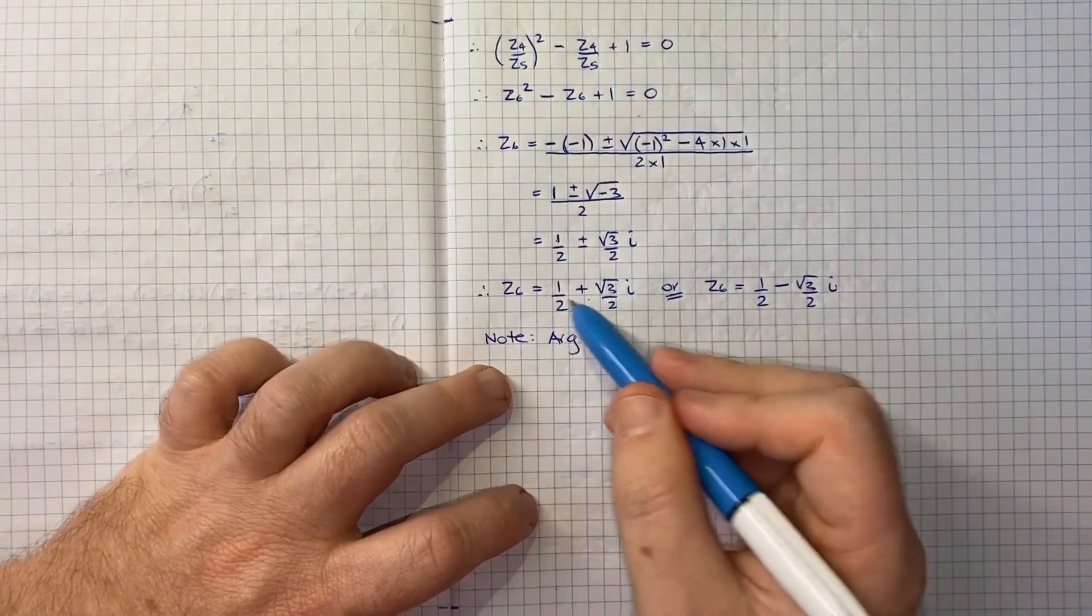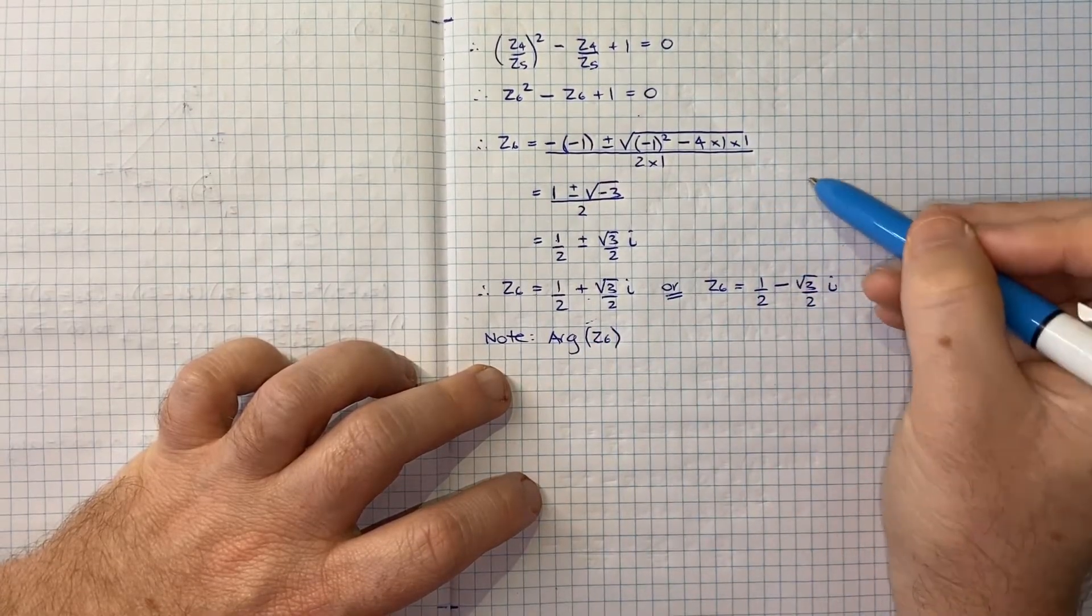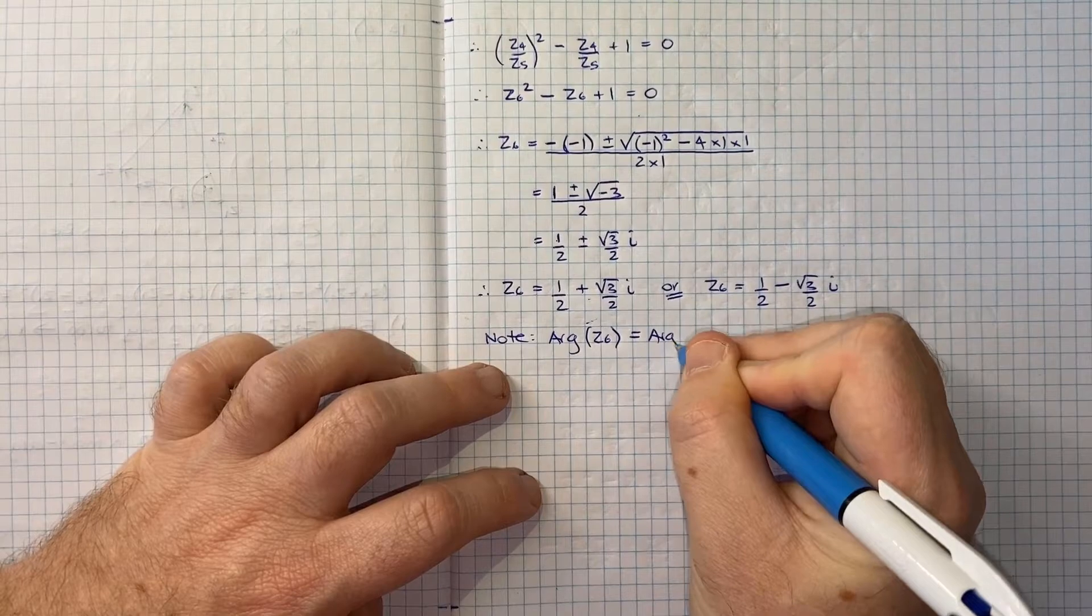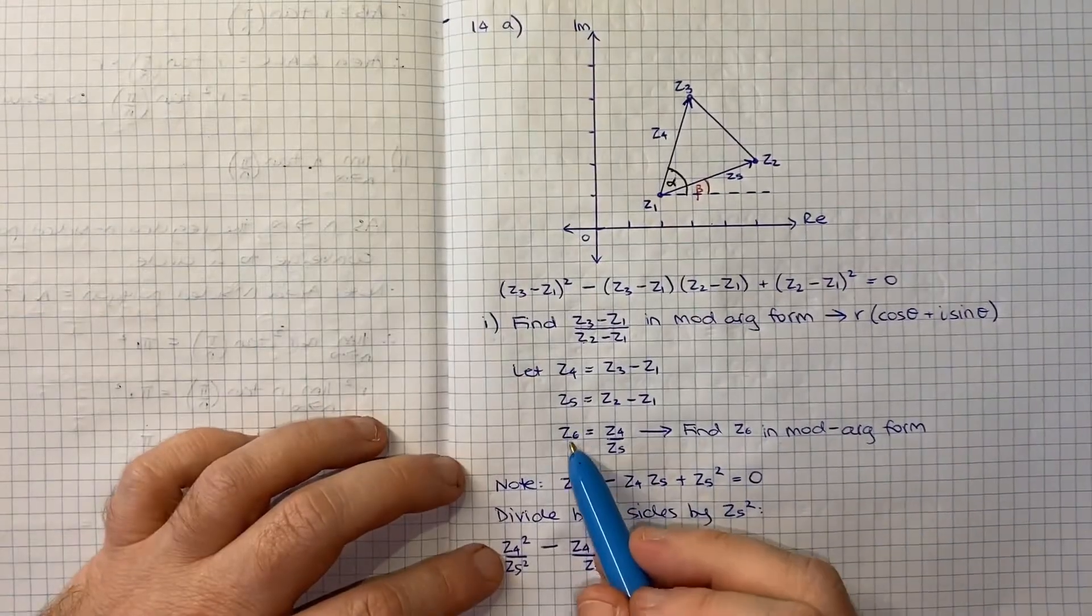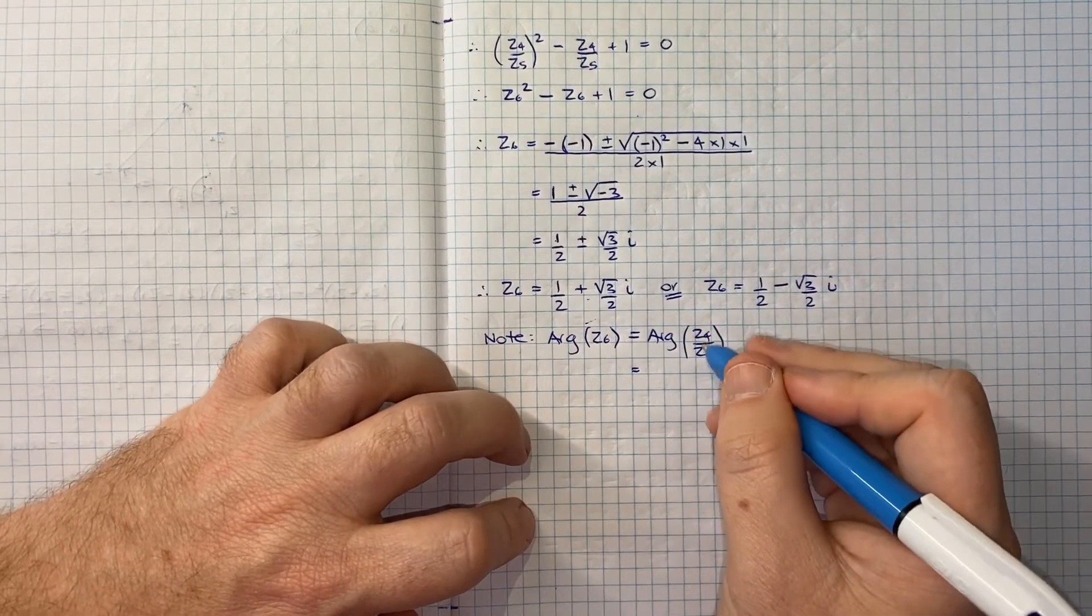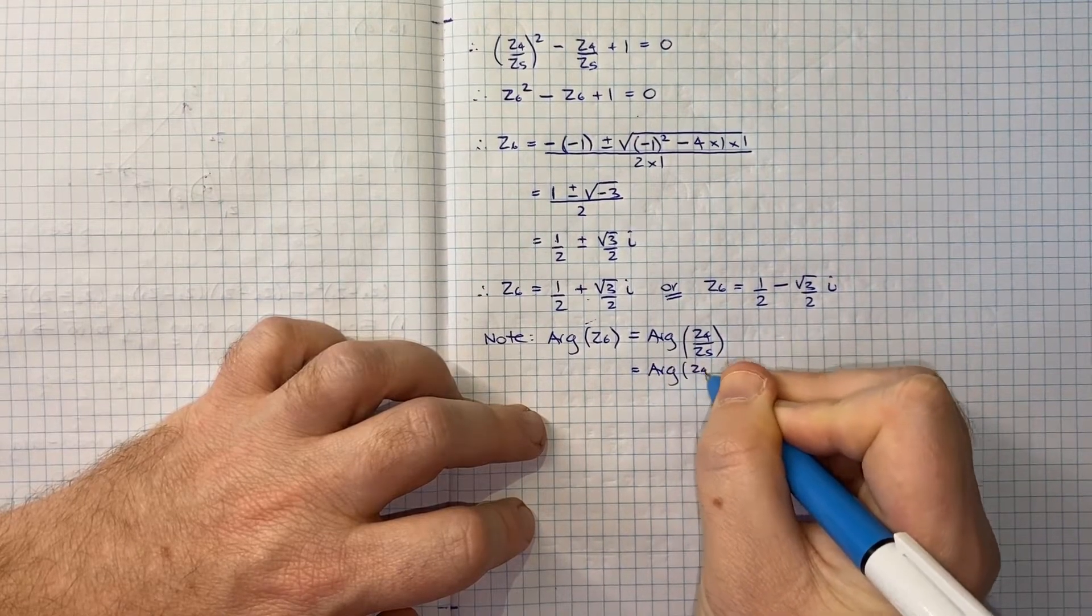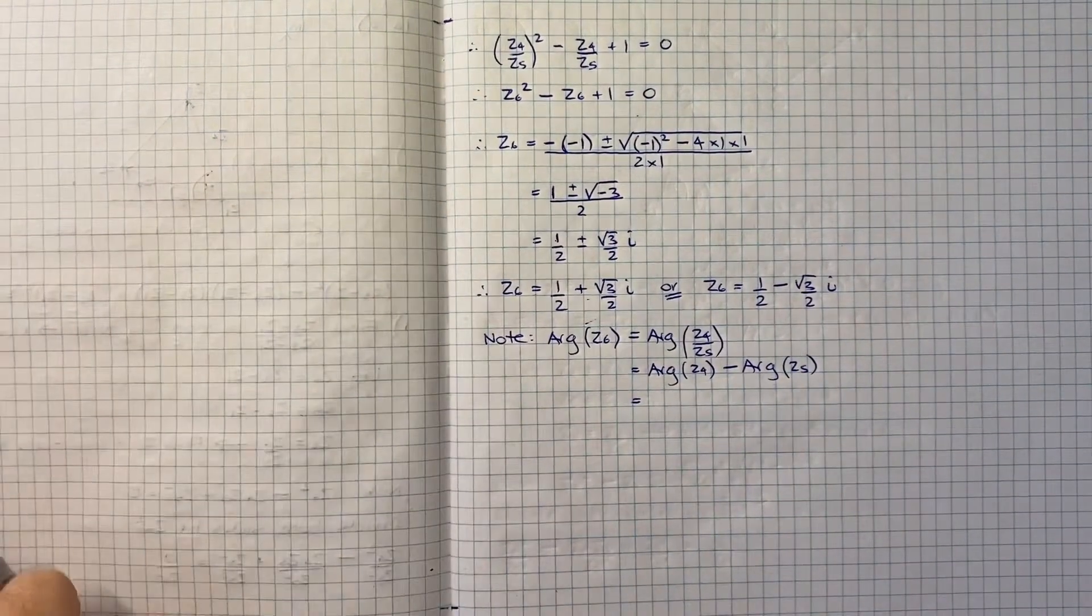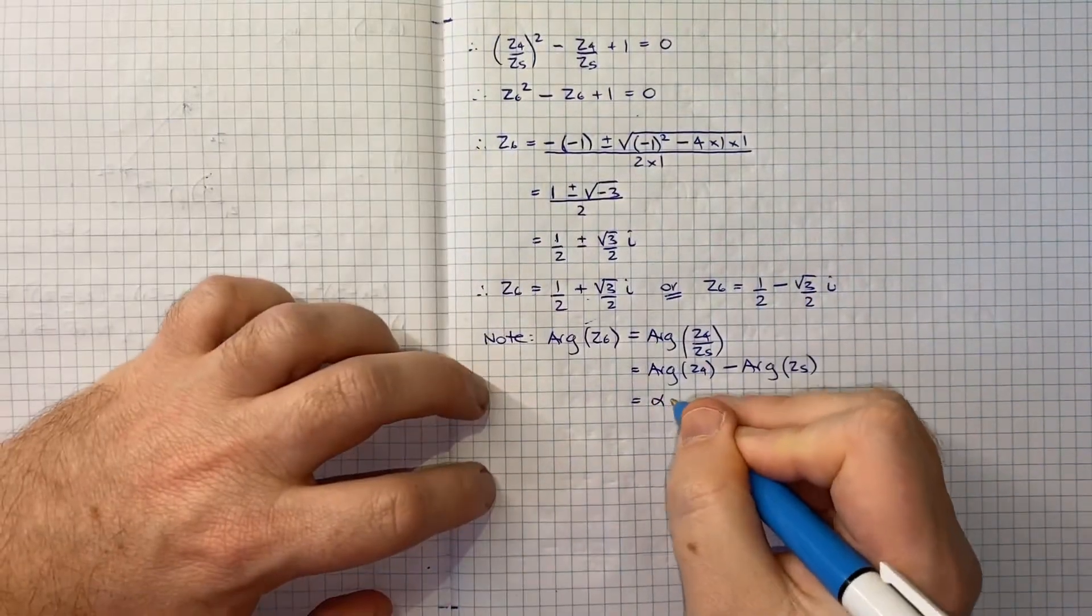Essentially, if the argument of Z6 is positive, we know we're going across and up. If the argument of Z6 is negative, we know we're going across and down. The arg of Z6 we can write as the arg of Z4 over Z5, because that's what we defined Z6 to be. That helps us use our rule to say the argument of two complex numbers divided is the difference of their arguments. So the argument of Z4 minus the argument of Z5. In terms of how I've just defined that, that's going to be alpha minus beta.